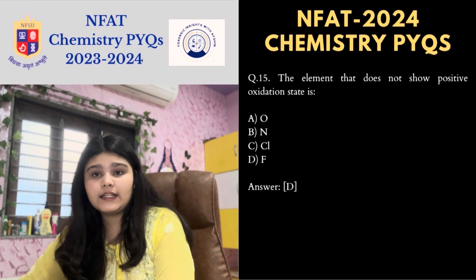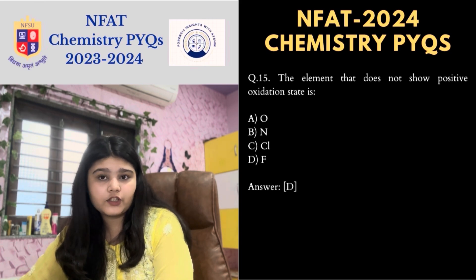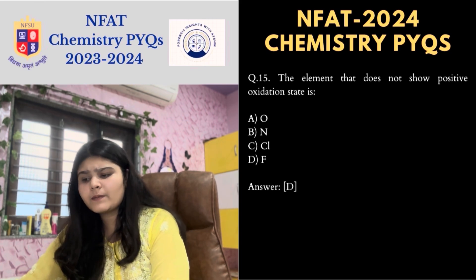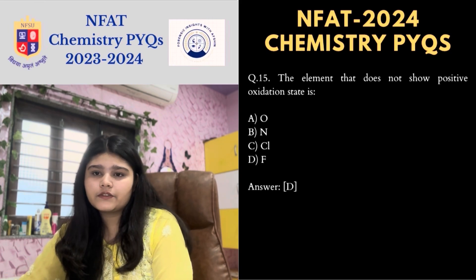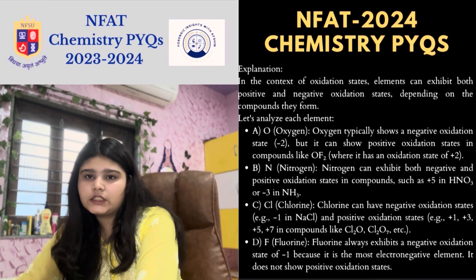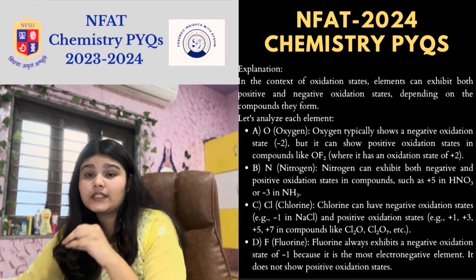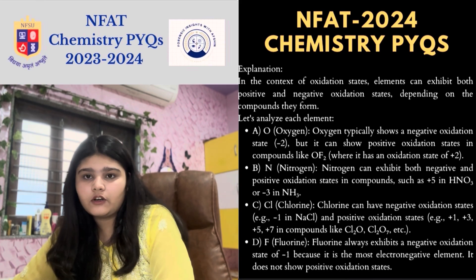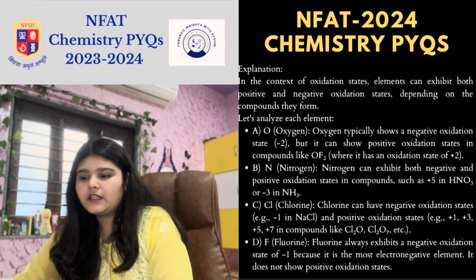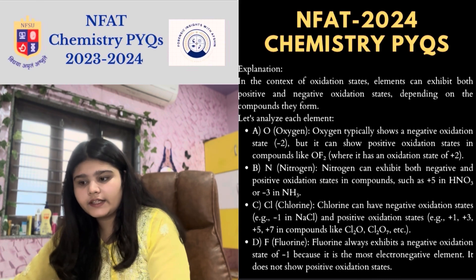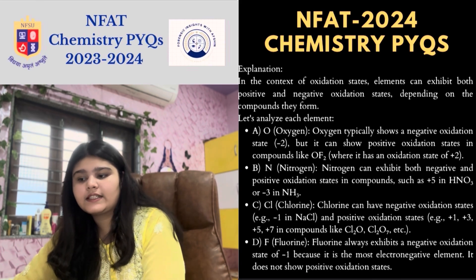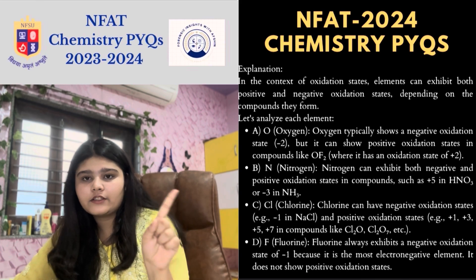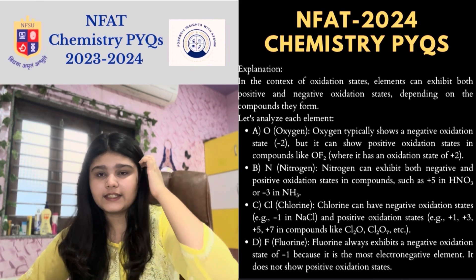Next MCQ: the element that does not show a positive oxidation state — oxygen, nitrogen, chlorine, or fluorine? Obviously fluorine, because it exhibits only a negative oxidation state of minus one being the most electronegative element. Oxygen can show positive oxidation states in compounds like OF₂, but fluorine does not show positive oxidation states at all. So option D is correct.